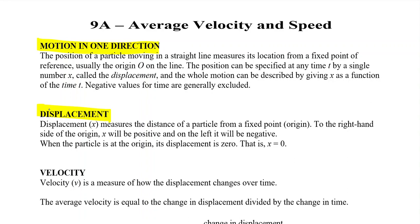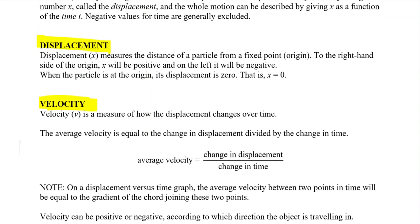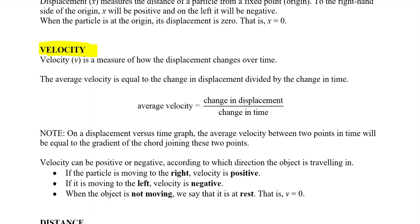Displacement has direction, not just a magnitude — those who do physics will know it differs from distance. When the particle is at the origin, displacement is zero. Velocity is the measure of how displacement changes over time: change in displacement over time. On a displacement-versus-time graph, the average velocity between two points equals the gradient of the chord joining them — that gradient ties directly into derivatives later.